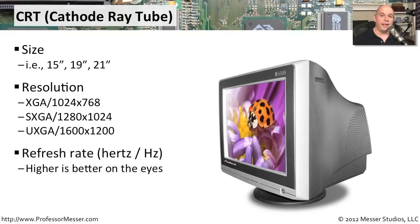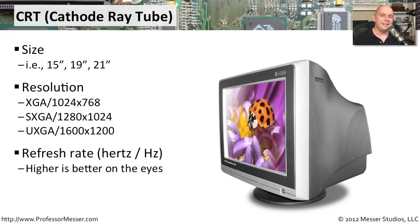An important specification for these older style CRTs was something called refresh rate. This referred to how fast the electron gun in this device can paint an entire screen. The refresh rates of these devices tended to be about 65 to 75, sometimes 85 hertz. That means that we could refresh the screen 85 times in a single second.